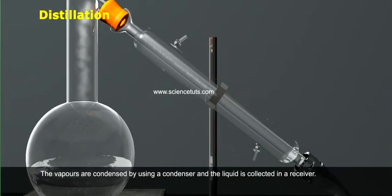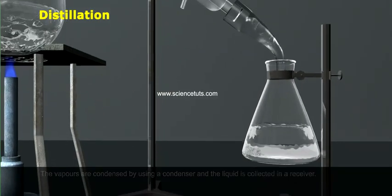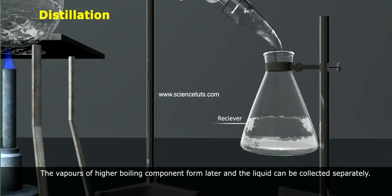The vapors are condensed by using a condenser and the liquid is collected in a receiver. The vapors of higher boiling component form later and the liquid can be collected separately.